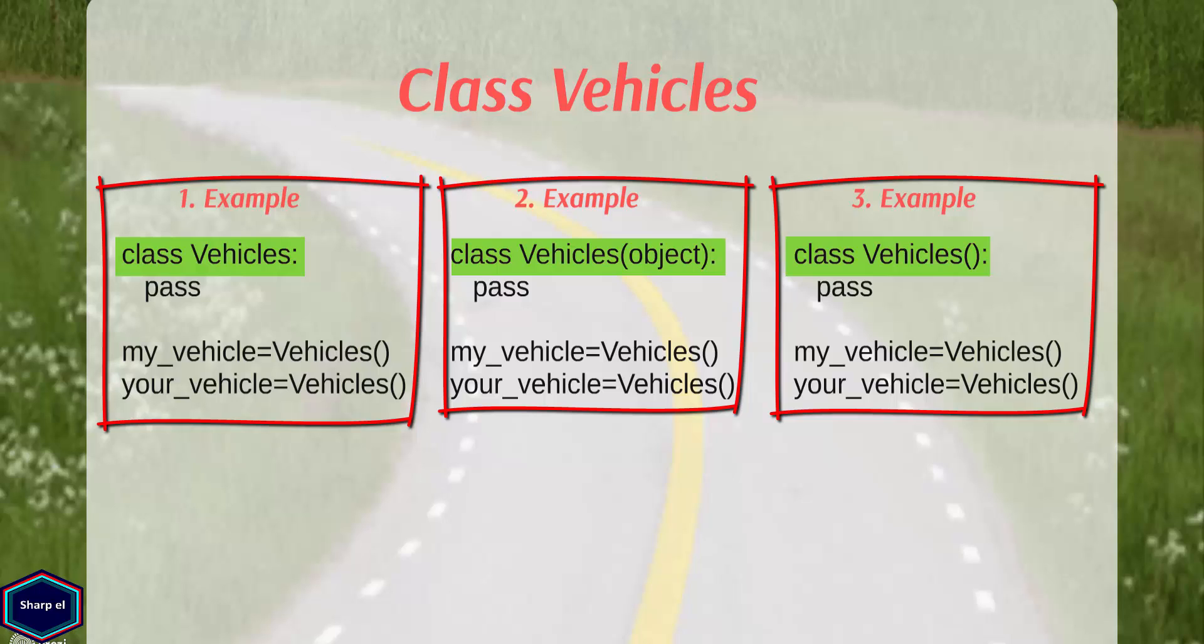In all these examples, my class vehicles does nothing. The Python keyword pass indicates that no further action need to be taken. I have also made two objects of class vehicles named myVehicle and yourVehicle. Creating an object in Python is very simple. You just type the class name followed by a pair of parentheses.